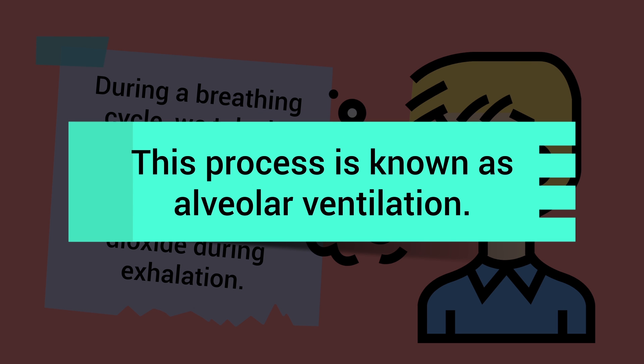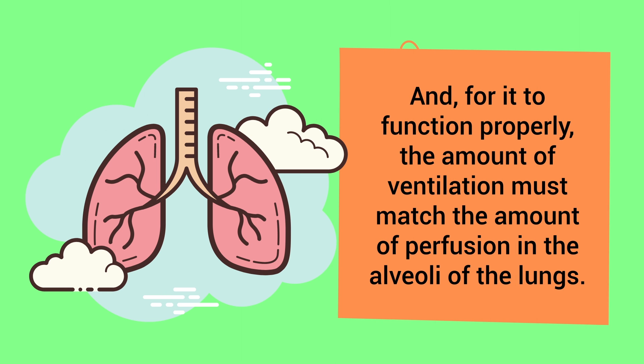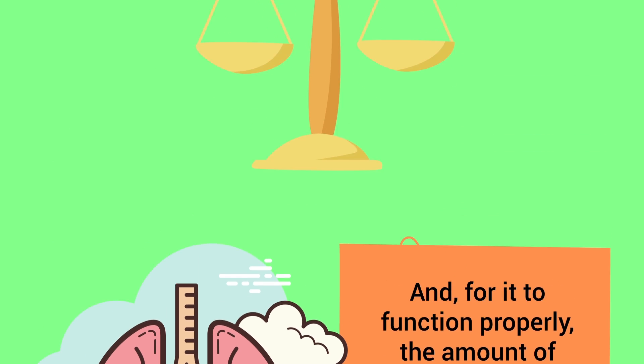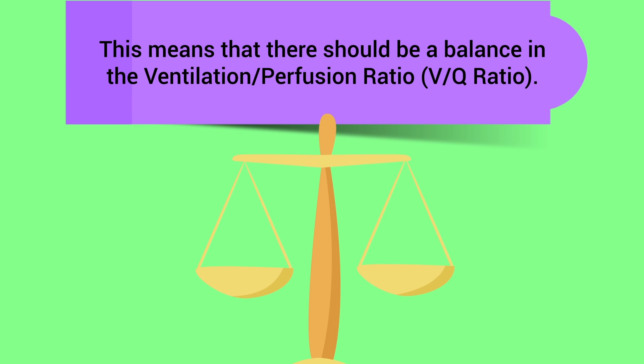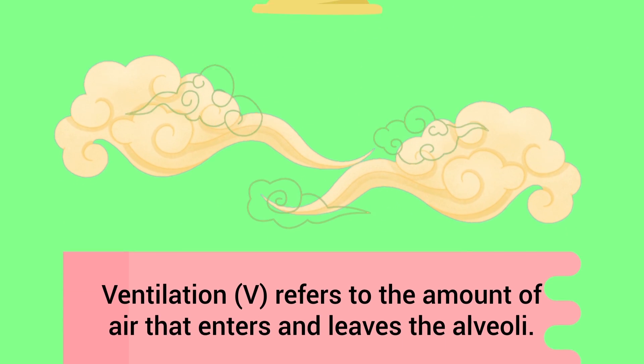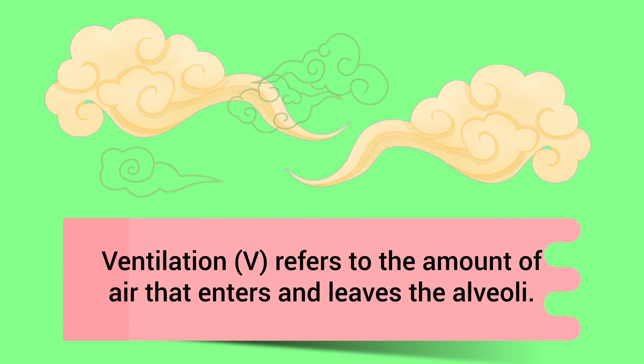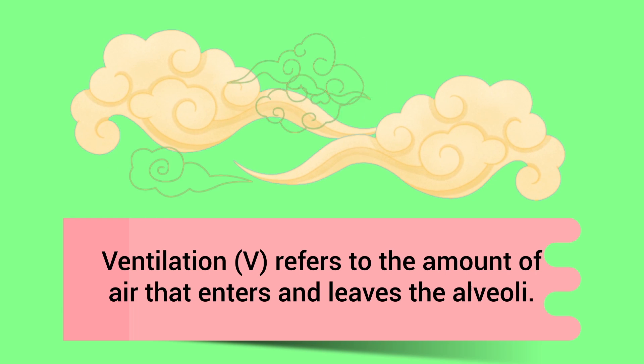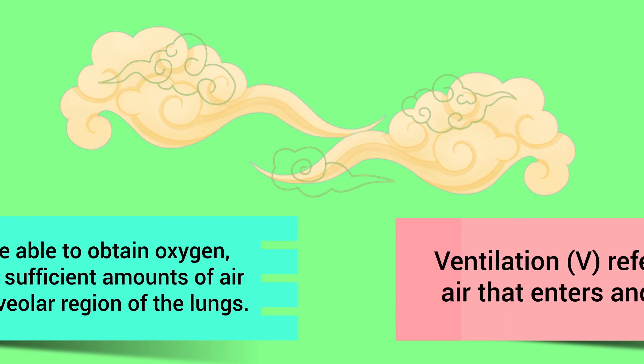This process is known as alveolar ventilation, and for it to function properly, the amount of ventilation must match the amount of perfusion in the alveoli of the lungs. This means that there should be a balance in the ventilation to perfusion ratio. Ventilation refers to the amount of air that enters and leaves the alveoli.